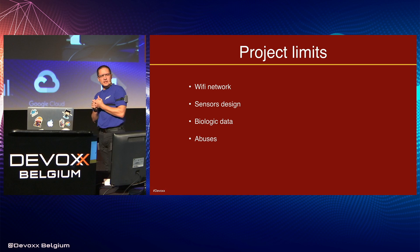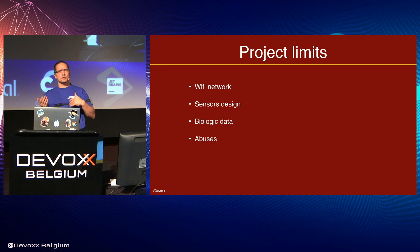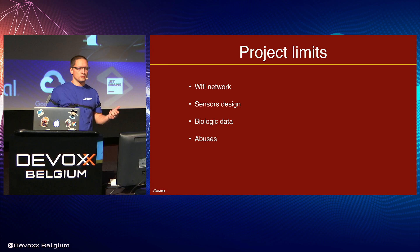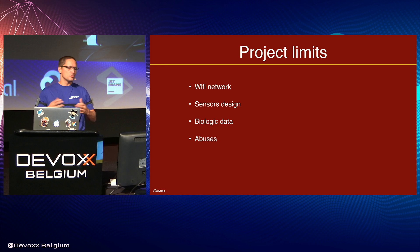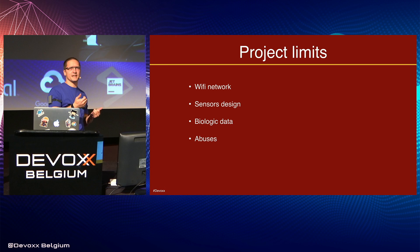There are some limitations to this project. The first is the Wi-Fi network — I am wearing an access point on my belt, and not everybody will agree to wear one. Moreover, in some manufacturing environments there are radio-sensitive areas where you are not allowed to carry a radio source. The other limitation is the sensor design itself — this is a first prototype using consumer electronics, so the sensors are somewhat large and the battery life is only about two and a half hours. A smartwatch already lasts three days with a heart rate monitor and sensors, so we will be able to do much better.